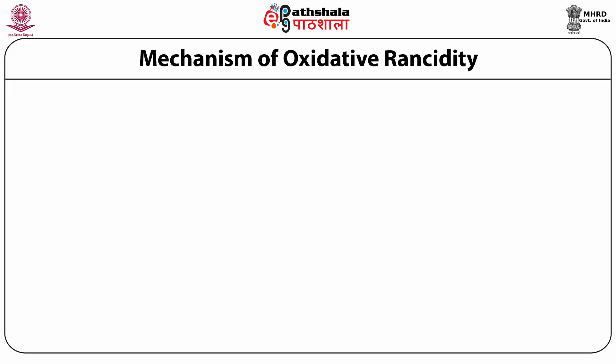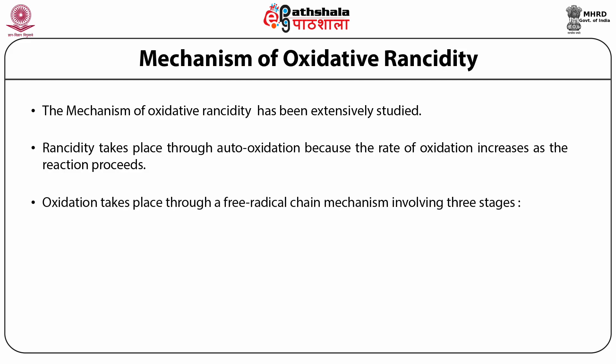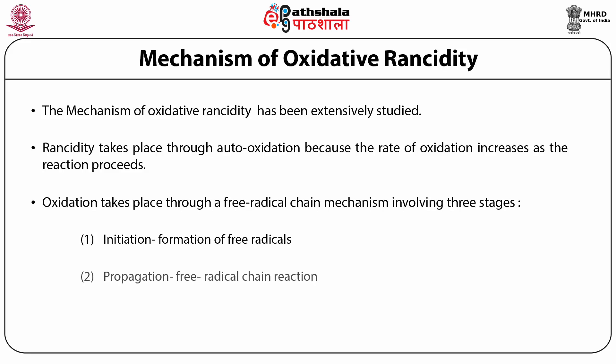The mechanism of oxidative rancidity has been extensively studied. Rancidity takes place through auto-oxidation because the rate of oxidation increases as the reaction proceeds. Oxidation takes place through a free radical chain mechanism involving three stages: first, initiation — that is, formation of free radicals; second, propagation — that is, free radical chain reaction; and third, termination — formation of non-radical products.